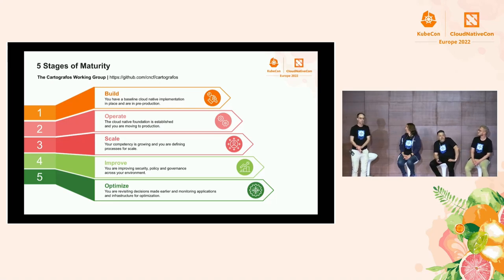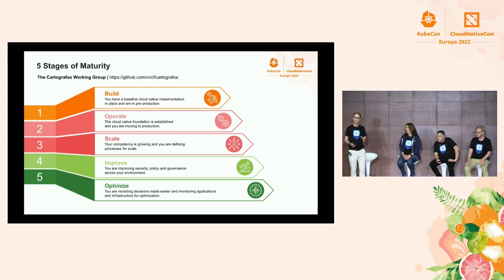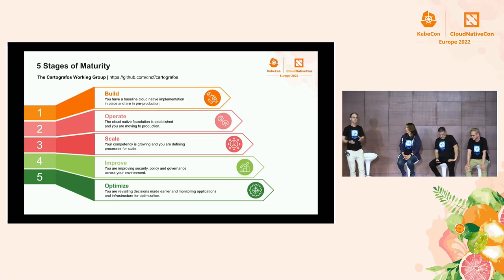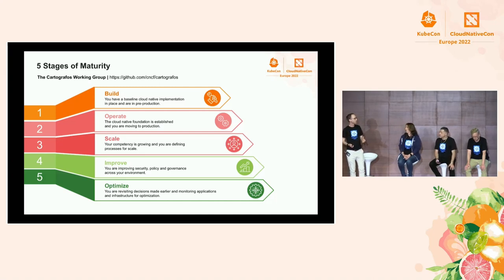It's important to recognize that at level one, where we start the journey, is not a baseline of zero — you're not starting with nothing. Rather, at level one it's pre-production, non-development; we're testing and starting to understand Kubernetes and related cloud-native technology. Level two, Operate, is the first step into production. Kubernetes is there and it's implemented.